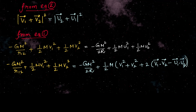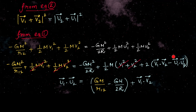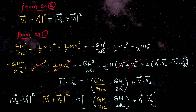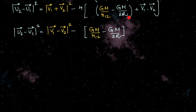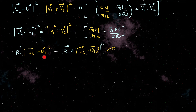Now from the conservation of energy equation, taking m by 2 common, u1 squared plus u2 squared can be written as v1 squared plus v2 squared plus 2 times (v1 bar dot v2 bar minus u1 bar dot u2 bar). We can cancel out the half mv1 squared and half mv2 squared terms on both sides, then simplify to find u1 bar dot u2 bar equal to half of (gm by R12 minus gm by 2r plus v1 bar dot v2 bar). So we have found (u2 bar minus u1 bar) whole square equals (v1 bar plus v2 bar) whole square minus 4 times u1 dot u2.